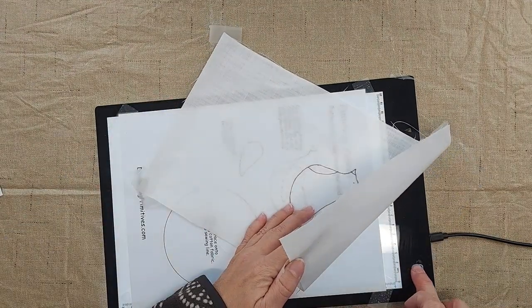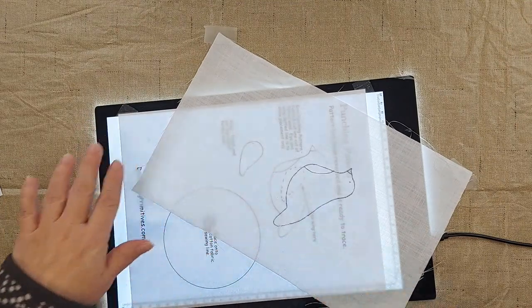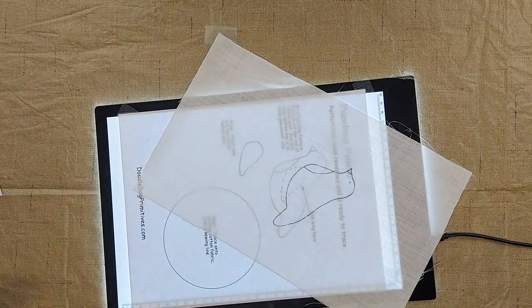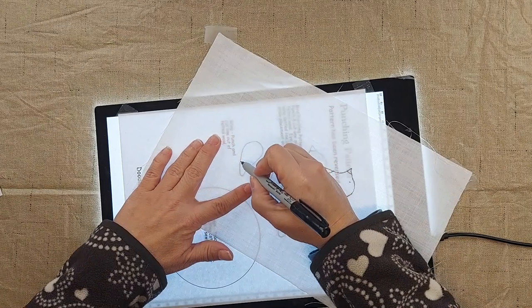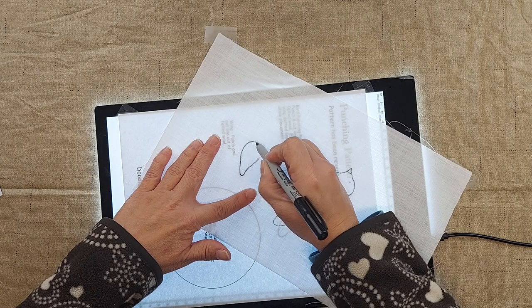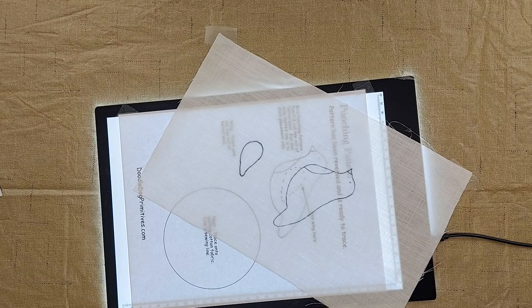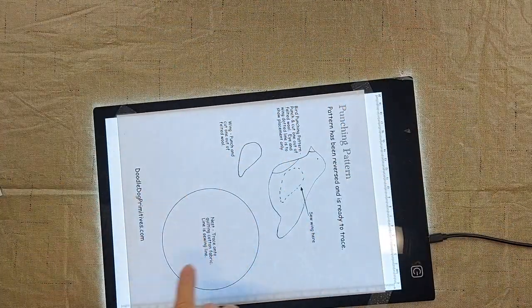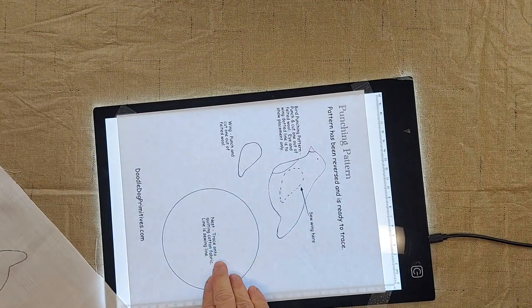I'm going to put it over here a little bit, and that will give me room in between for my seam allowance. Tape that down, and then I'll trace the wing. And this part of the pattern is for making the bird's nest, and it is made with quilting cotton. I don't need to trace it onto the weaver's cloth.